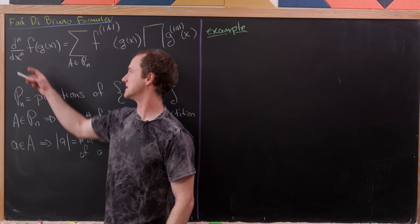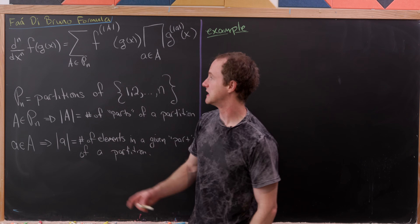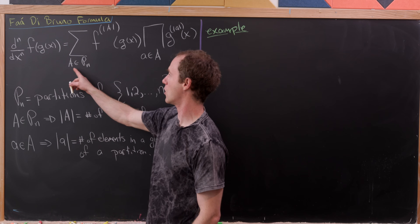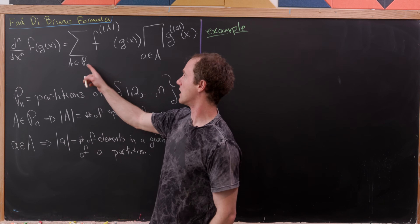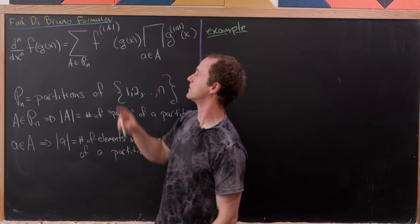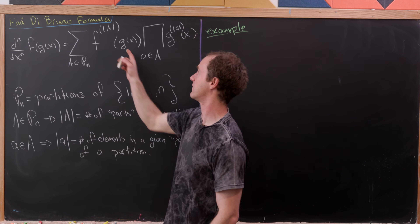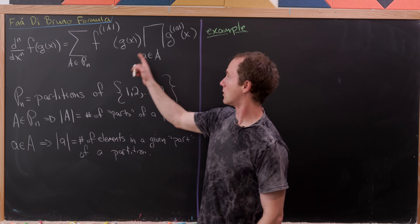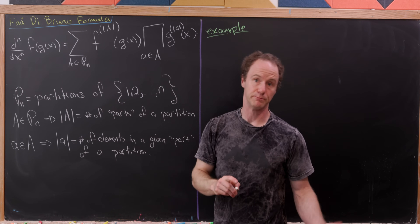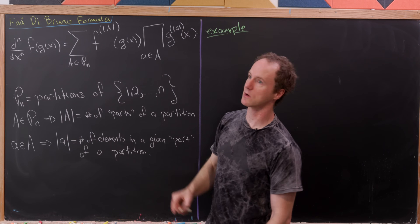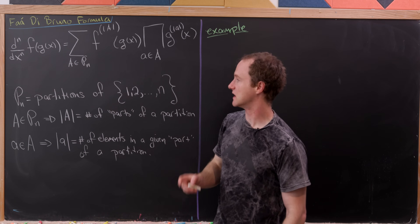What it says is that the nth derivative of the composition f of g of x is equal to the sum over A in P_n — we'll go over what P_n means — of the |A|-th derivative of f evaluated at g, multiplied by the product over all elements a in big A of the |a|-th derivative of g of x.